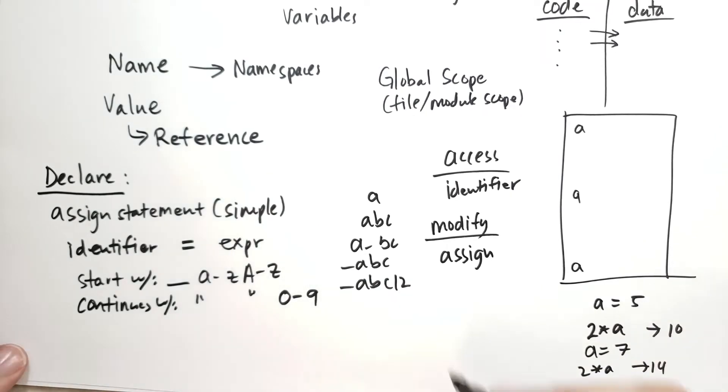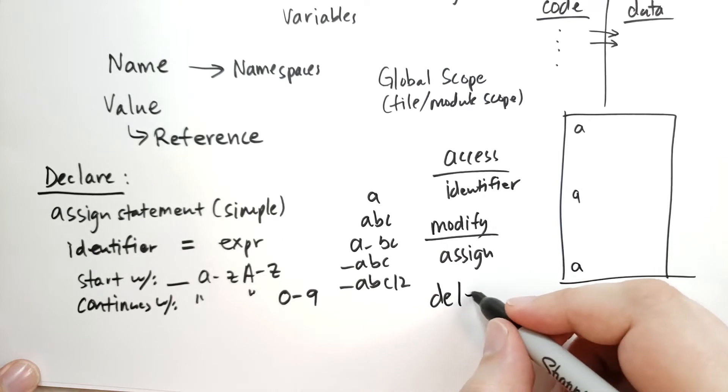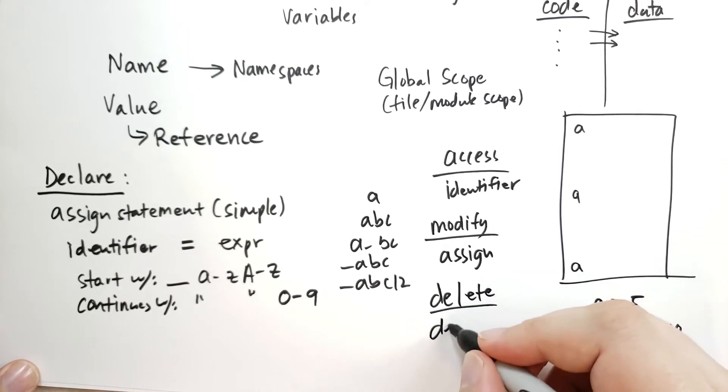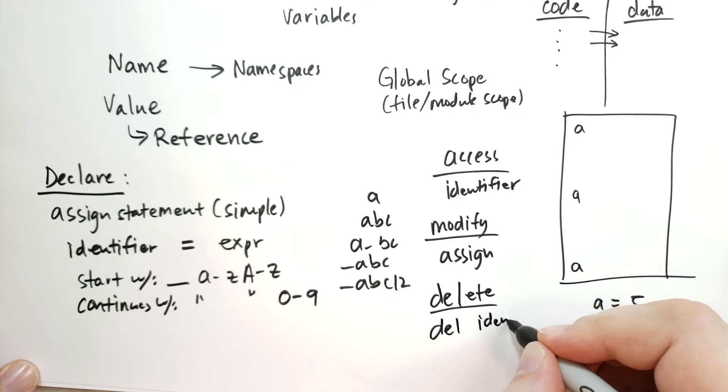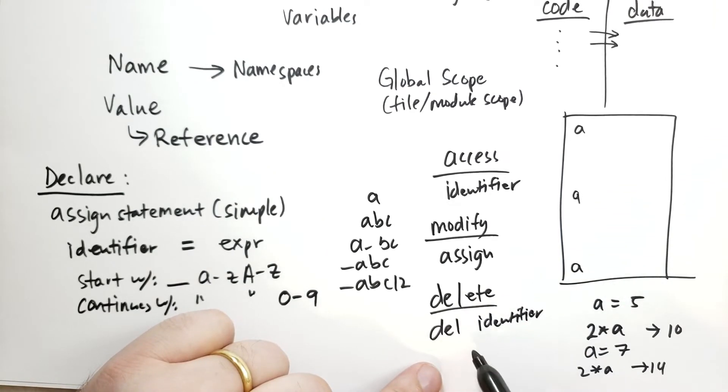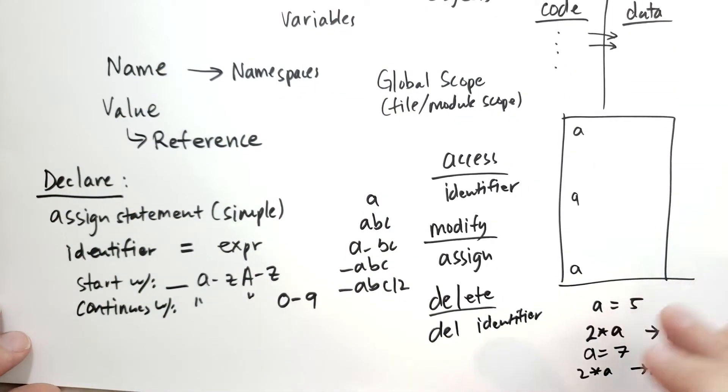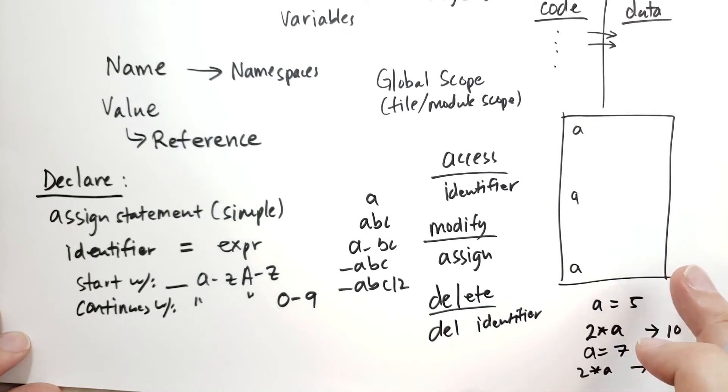All right, and when we're done, we can delete with the del statement. So we can delete a variable by saying del, and then the identifier. After you deleted the variable, it's an error, it's a name error to try to access that variable again. Typically, we don't delete variables. There is some special cases where we do, however.